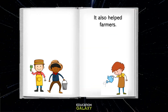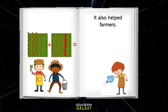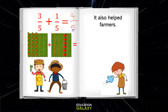It also helped farmers. I planted three-fifths of the land plot with carrots. I planted one-fifth of the land plot with tomatoes. How much of the land plot is planted? The law says we can only add fractions with common denominators. Luckily, we can add three-fifths plus one-fifth. We just add the numerators — three plus one equals four — and keep the same denominator, five.